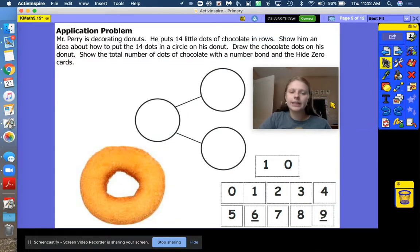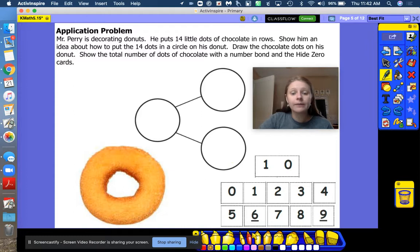All right, friends. Mr. Perry is decorating donuts. He puts fourteen little dots of chocolate in rows. Show an idea of how he could put those chocolate chips on his donut. We need fourteen. So if you have your board or paper in front of you, I need fourteen dots. I'm going to make mine a little bit bigger so that you can see. And I'm going to try and organize them nicely for you. So he is going to add fourteen.